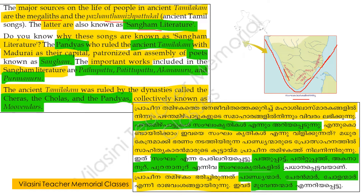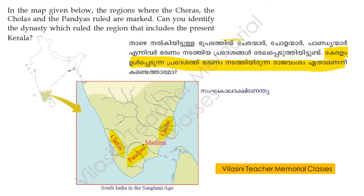The important works included in Sangham Literature are Pattupaattu, Aganananuru, and Purananuru. The ancient Tamilakam was ruled by the dynasties called the Cheras, the Cholas, and the Pandyas, collectively known as Movenders. The Pandyas had Madurai as their capital. These three royal dynasties ruled the South Indian regions during the Sangham Age.